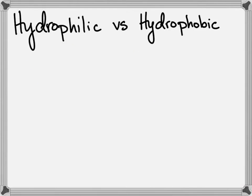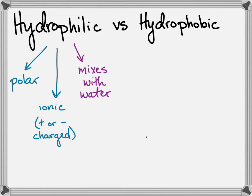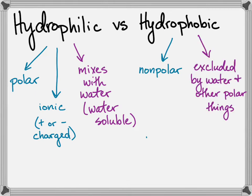Since water is polar, it interacts with all other polar things. It also interacts with ionic, or charged molecules. So we call polar molecules and ions hydrophilic, or water-loving molecules. They are also water-soluble. Nonpolar molecules are excluded by water and by other polar molecules. For that reason, we call nonpolar things hydrophobic.